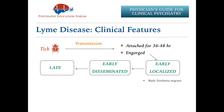So erythema migrans rash is the first sign in early localized Lyme disease. The other symptoms that can happen are viral-like, which are very non-specific — things like fatigue, malaise, fever, chills, myalgia, and headaches. These are the two important signs to look for in early localized Lyme disease.